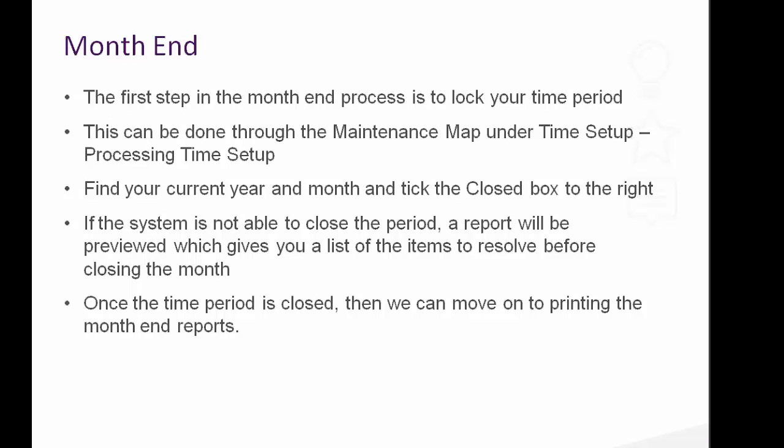The first step in our month-end process before we've done anything else is to lock the time period that we're finalising. The reason that we do that is we want to make sure that any reports we run don't change their figures after the fact. So we close that period off first, then lock that in place. That means that we can't put any additional transactions into that period — no timesheets, no invoices, no receipts, no adjustments. That period is locked and we can then print all of our month-end reports knowing those figures are always going to be the same.